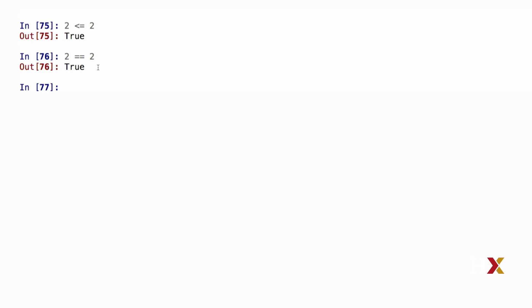We can ask if two objects are not equal to one another by using the exclamation point followed by an equals sign. In this case the answer is False, because 2 is equal to 2.